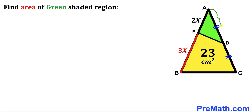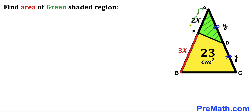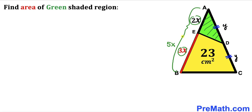Let's assume this segment is Y, then this other segment is Y as well. Now let's focus on the green shaded triangle AED. Its side lengths are AE and AD. The whole length AB is going to be 2x plus 3x, which makes 5x, and likewise the whole AC length is going to be Y plus Y, which is 2Y.